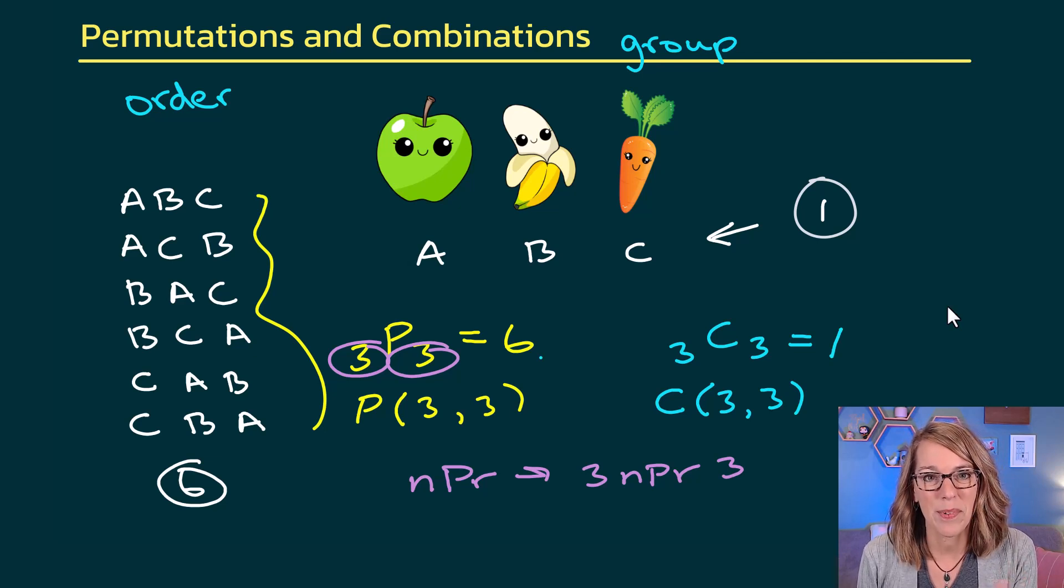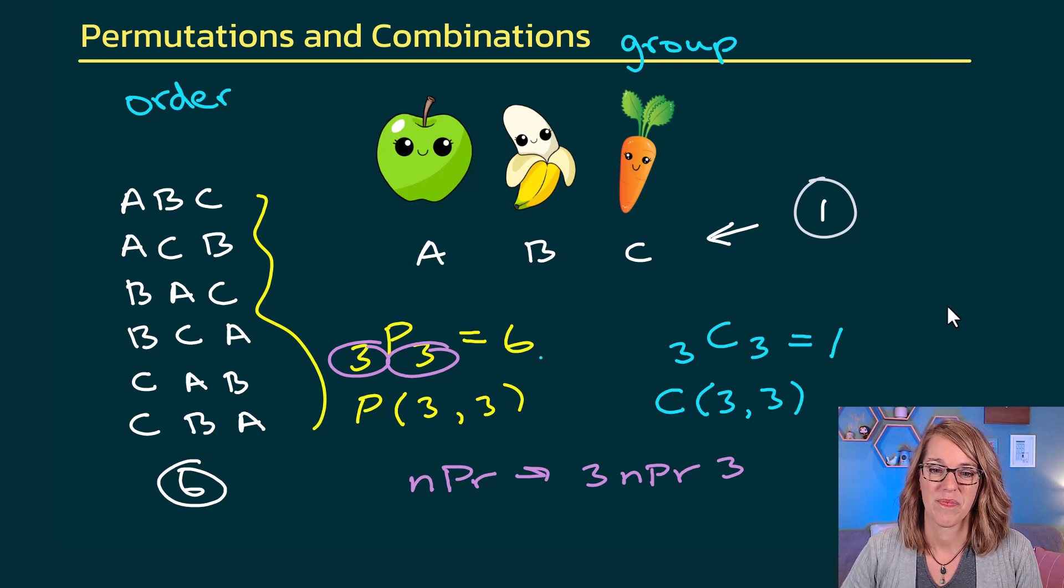Let's take a look at some examples and compute these using the calculator. In example 1, we're choosing 4 appetizers from 8 different options, and in example 2, we're ranking 4 appetizers from 8 different options.